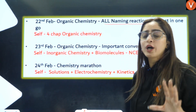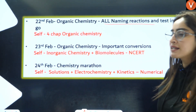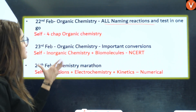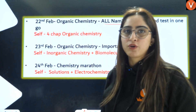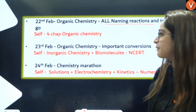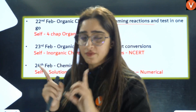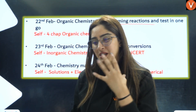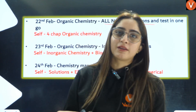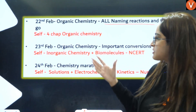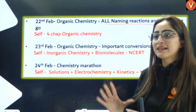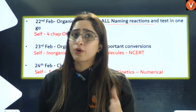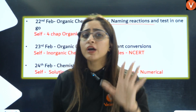Next, on 23rd of February, we will do Organic Chemistry important conversions. For self-study, what you have to do is inorganic chemistry plus biomolecules — that too from NCERT — because DNF block, coordination chemistry, and biomolecules are memory-based chapters. That's why I am saying do them together and from NCERT. You can pick out important lines, or if you have really good notes, you can also watch my one-shot videos.